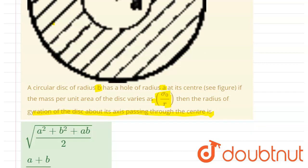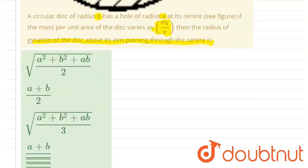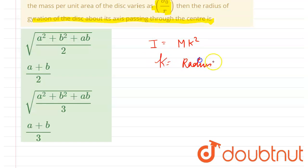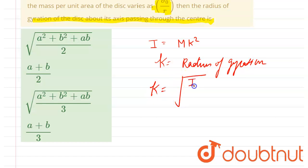Let us first discuss the radius of gyration. If I is equal to mk², where I is the moment of inertia and m is the mass, then k is the radius of gyration. So the radius of gyration k is equal to the square root of I divided by m.